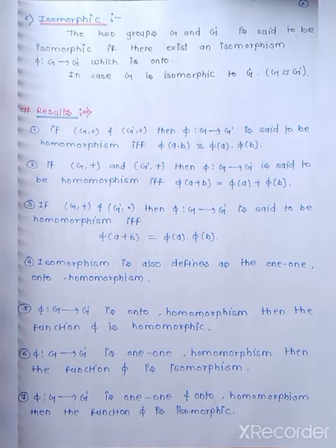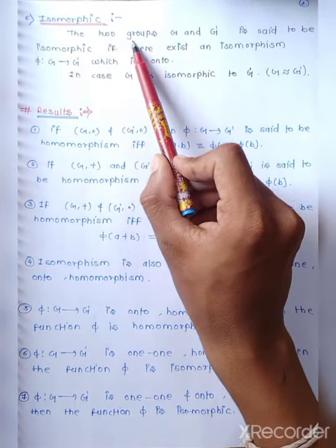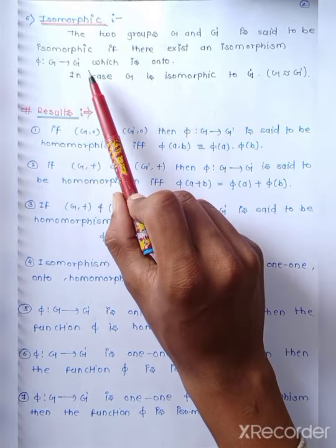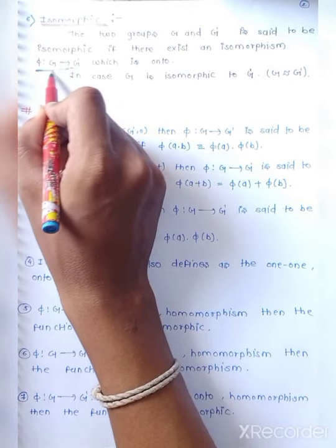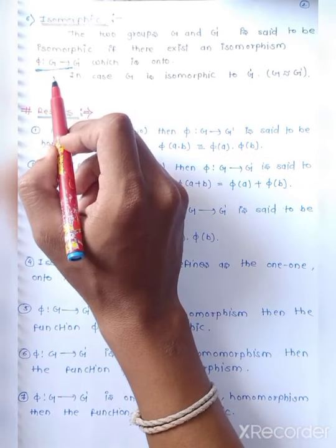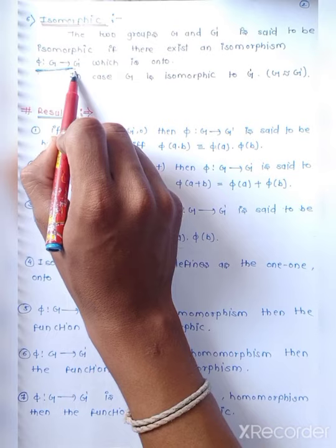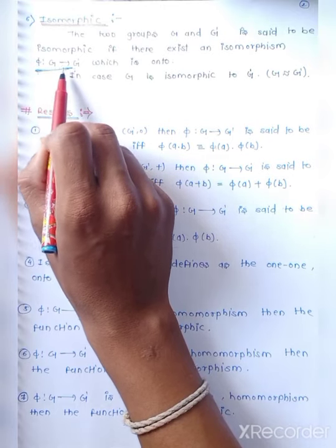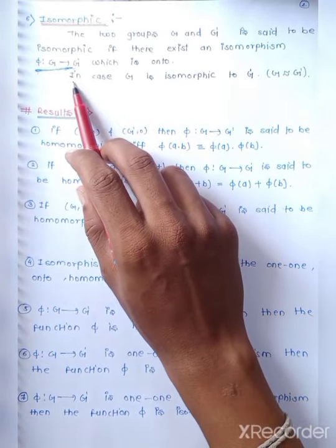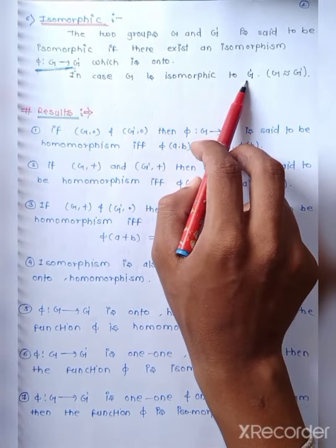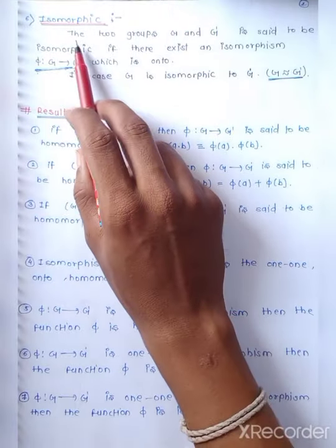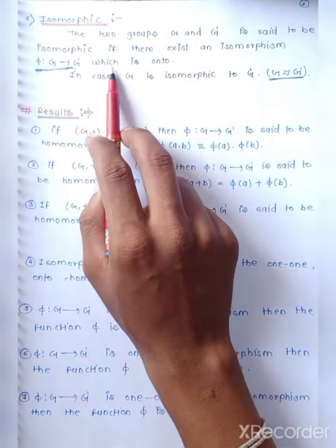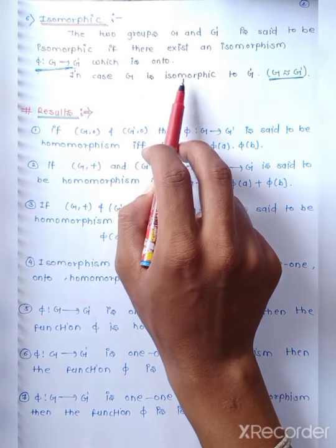The next definition is isomorphic. The two groups G and G dash are said to be isomorphic if there exists an isomorphism phi from G to G dash which is also onto. In this case, G is isomorphic to G dash, and it is denoted as G ≅ G dash.